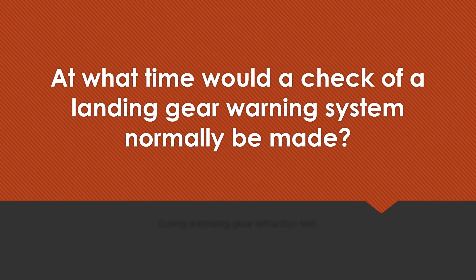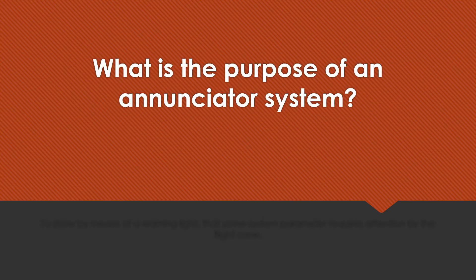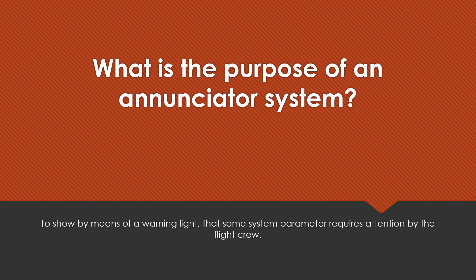At what time would a check of a landing gear warning system normally be made? During a landing gear retraction test. What is the purpose of an enunciator system? To show by means of a warning light that some system parameter requires attention by the flight crew.